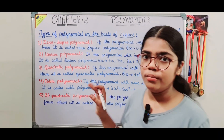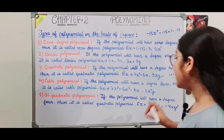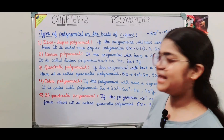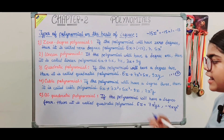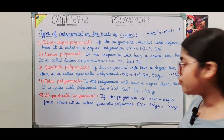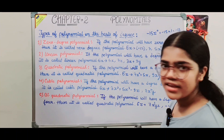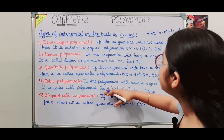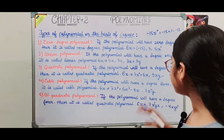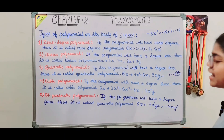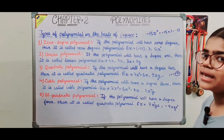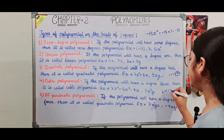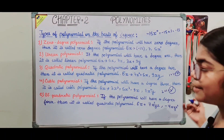Next, the cubic polynomial: if the polynomial has degree 3, then it is called a cubic polynomial. For example, x cubed plus 5x squared minus 9x — the powers are 3, 2, and 1; the highest is 3. Another example: 7x squared y — x has power 2 and y has power 1, so 2 plus 1 equals 3. So this is also a cubic polynomial.